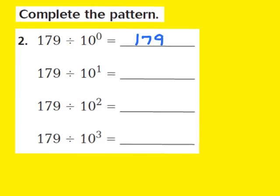Now take a look at the next part in this pattern. We have 179 being divided by the first power of 10. My exponent here is a 1. So I'm going to write down 179, start from the end, and move my decimal over one place to the left. My answer here turns out to be 17 and 9 tenths.